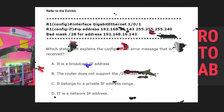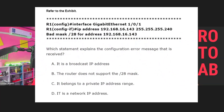Which statement explains the configuration error message that is received? We can see it on the screen. The answer choices are: A) it's a broadcast IP address, B) the router doesn't support /28 mask, C) it belongs to a private IP address range, D) it's a network IP address.